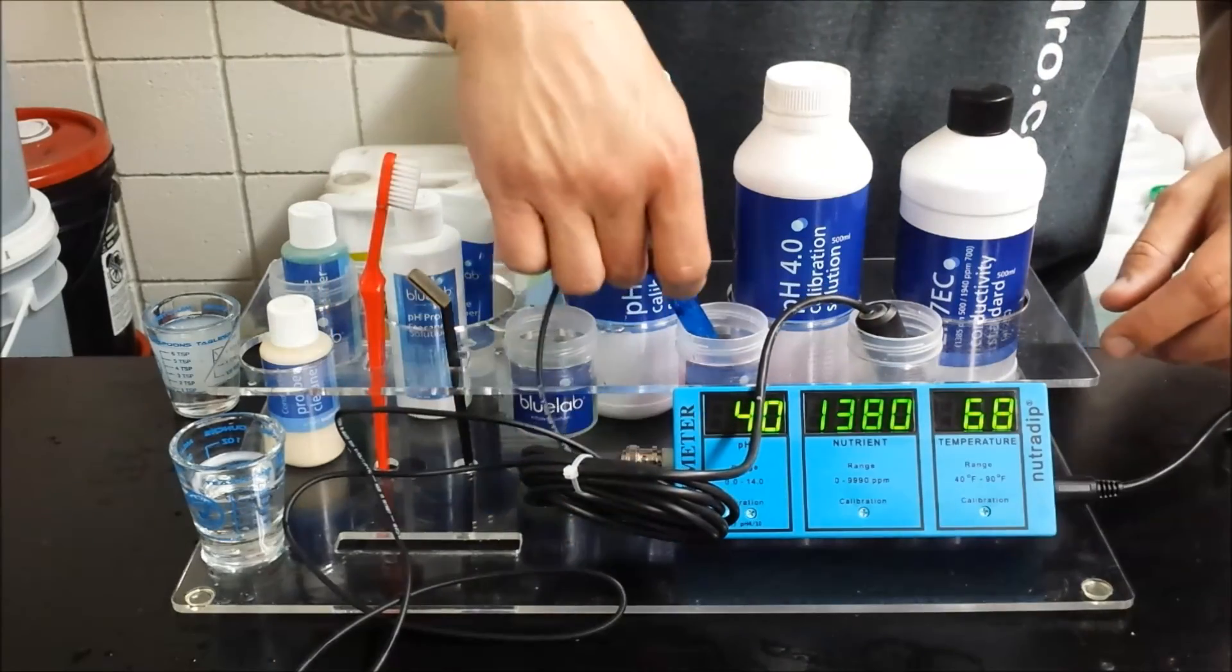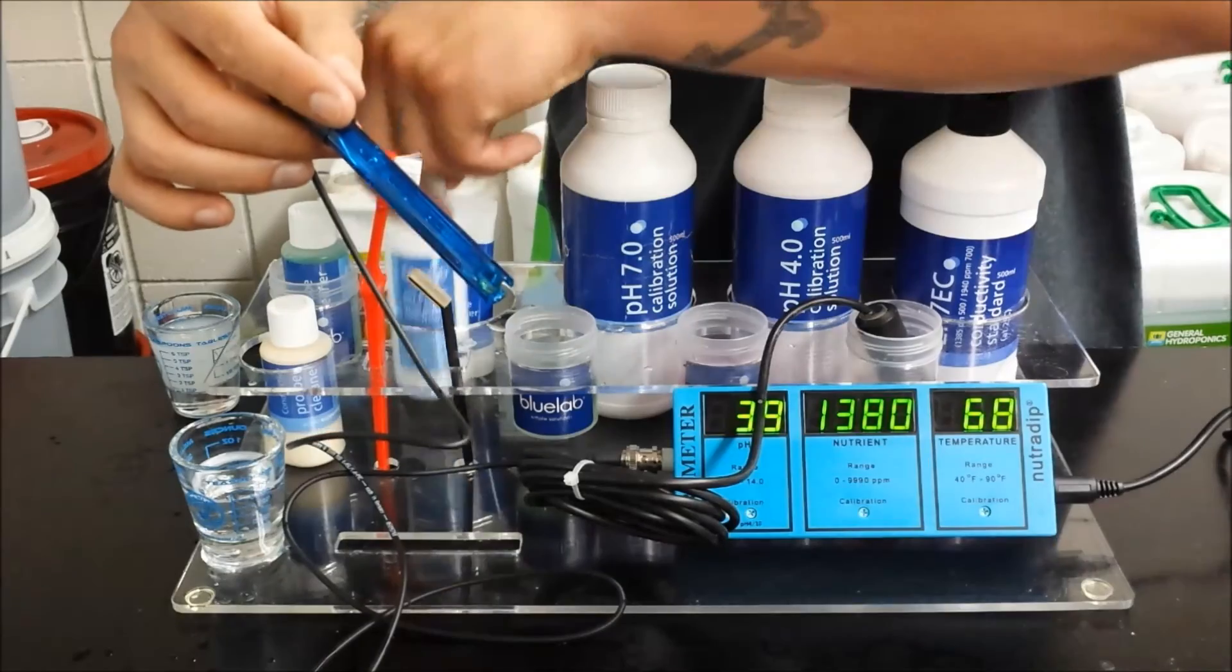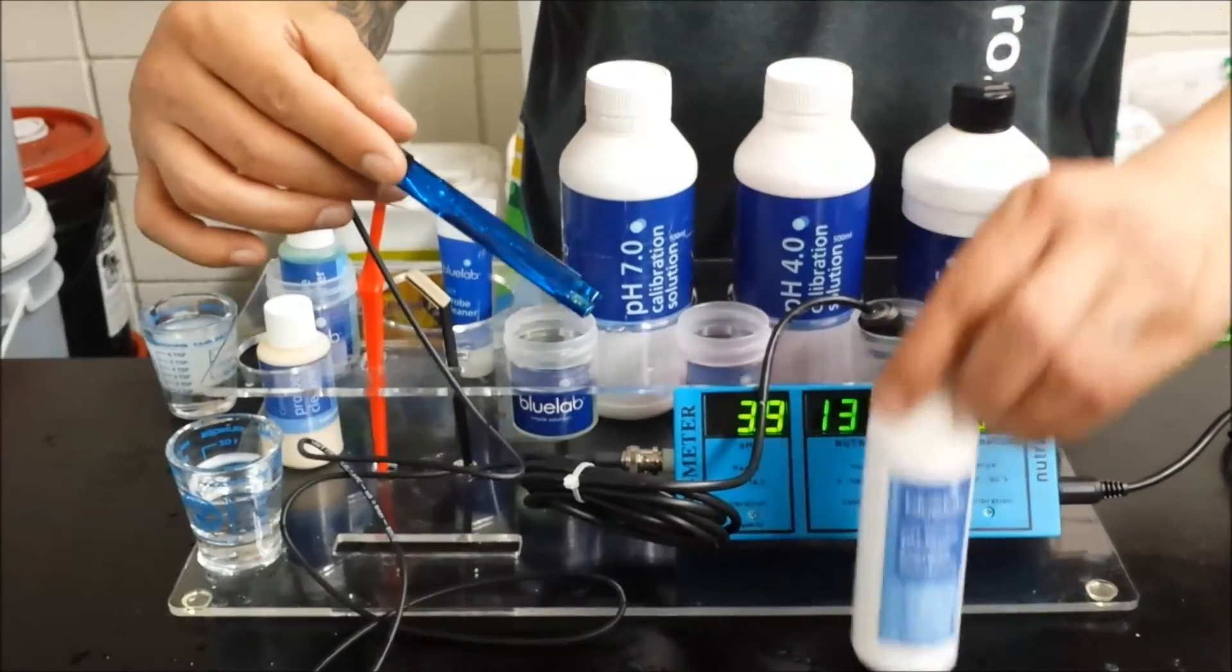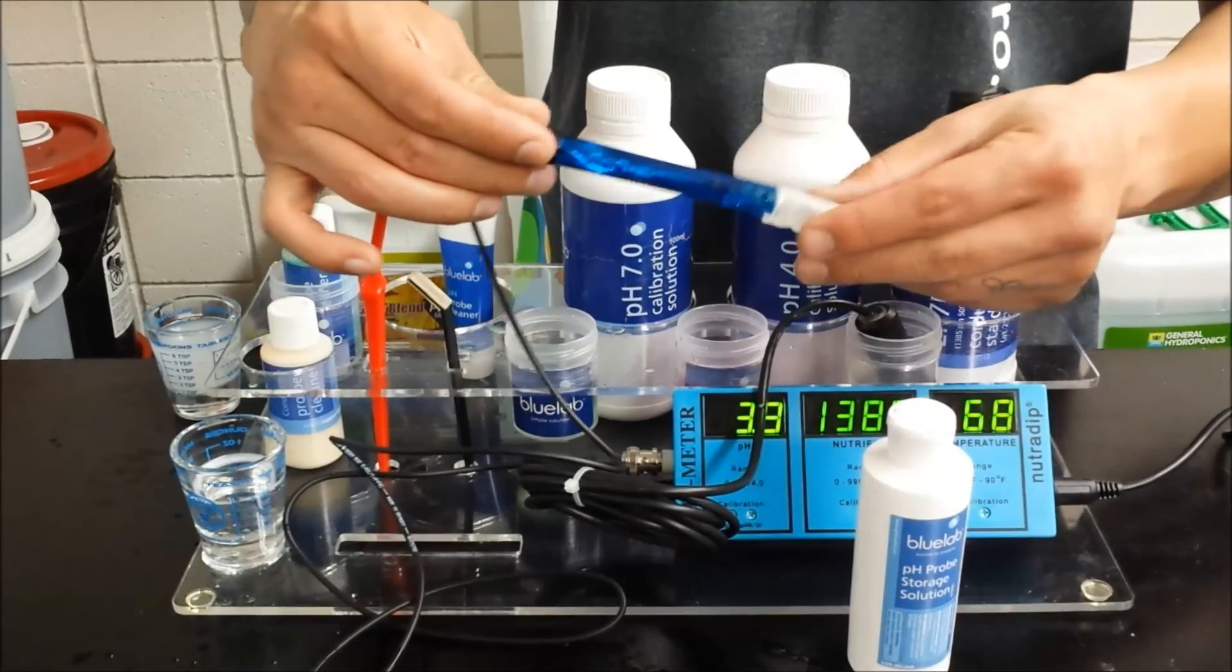And for storage when you put this away, you do want to make sure your pH probe never dries out. You can use some KCL storage solution and you're going to want to add that to the cap before putting it away.